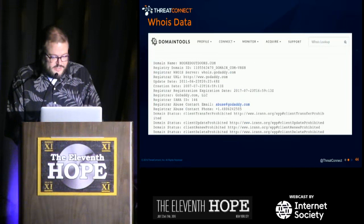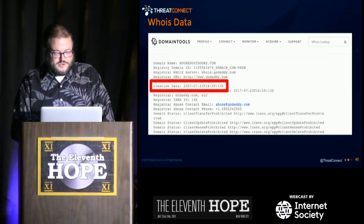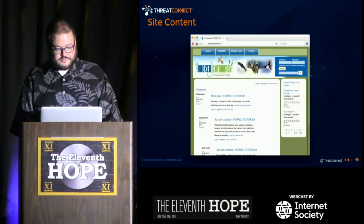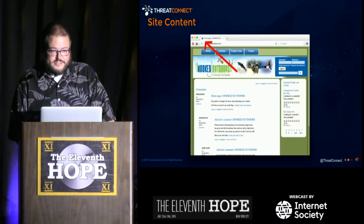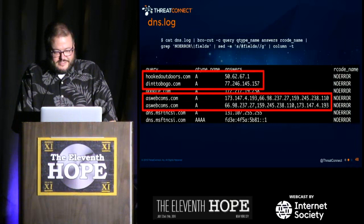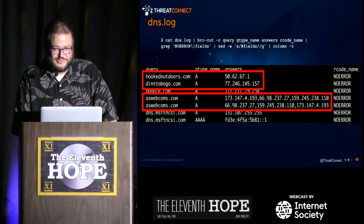Let's look at the WHOIS data using Domain Tools. The domain hookedoutdoors.com has a creation date of 2007 — chances are malware C2s owned by the adversary are not created in 2007, so this is probably compromised. Looking at the site content, it's someone's fishing lure site. Interestingly, it has the Drupal favicon, so I have a pretty good idea how the adversary got into this website. Moving to the next DNS entries: hookedoutdoors, dinttobogo.com, and aswebcoms.com — if you're hardcore malware analysis or threat intel people, you know exactly what we're looking at here.